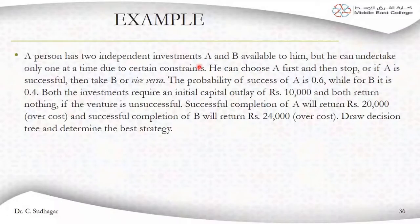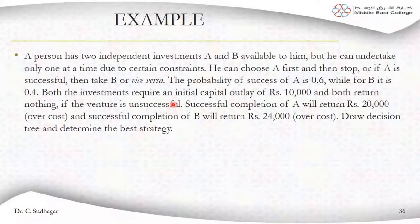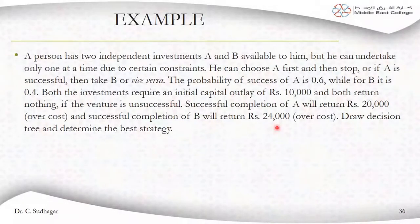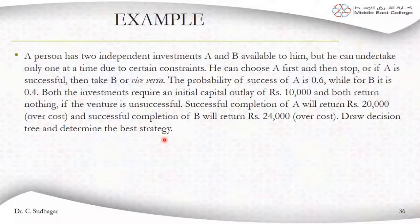So these are the available options. There are two decisions to make: first, what business to start, and second, if the first business is successful, whether to go for the second business or not. We will draw a decision tree for that. Read the question, draw the decision tree, and determine the best strategy.